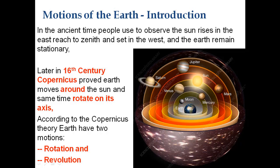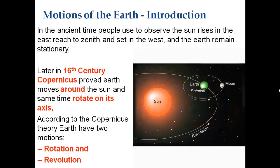Later, in the 16th century, Copernicus proved that the Earth moves around the Sun and at the same time rotates on its own axis. As you can see in this picture, the Sun is in the center — this is called the heliocentric view. The Earth revolves about the Sun while also rotating on its own axis. According to Copernicus, the Earth has two motions: rotation and revolution.